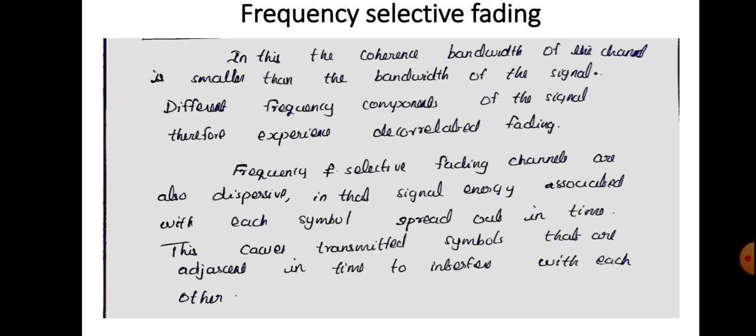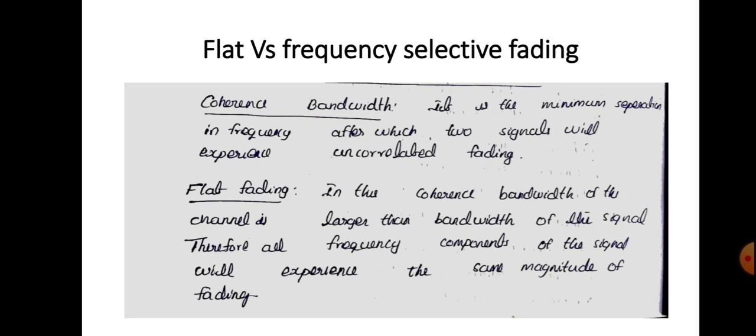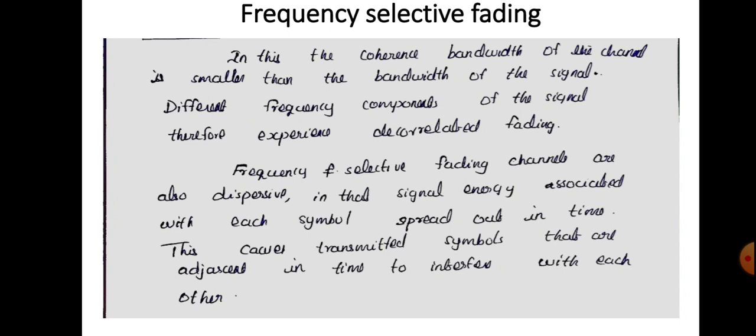In frequency selective fading, the coherence bandwidth of the channel is smaller than the bandwidth of the signal. As a result, different frequency components of the signal experience decorrelated fading — different amounts of fading. Frequency selective fading channels are also dispersive: the signal energy associated with each symbol spreads out in time. This causes adjacent symbols to interfere with each other, so adjacent frequency components will interfere with each other.